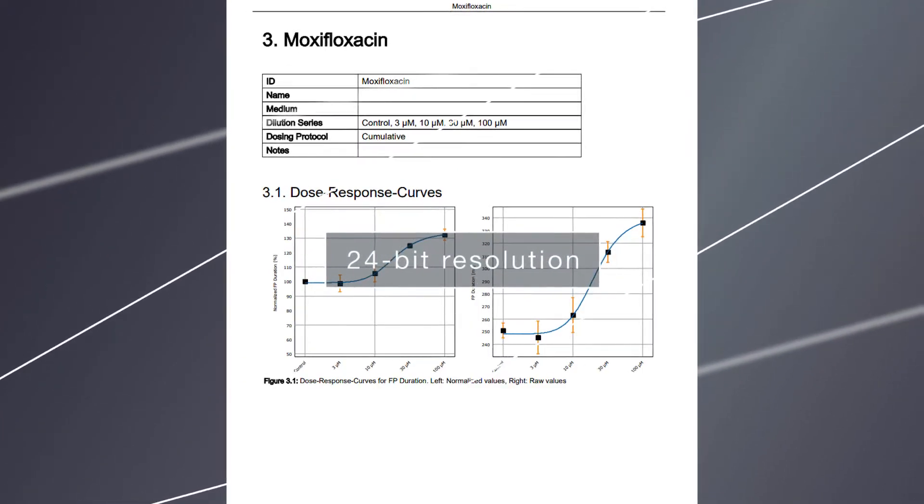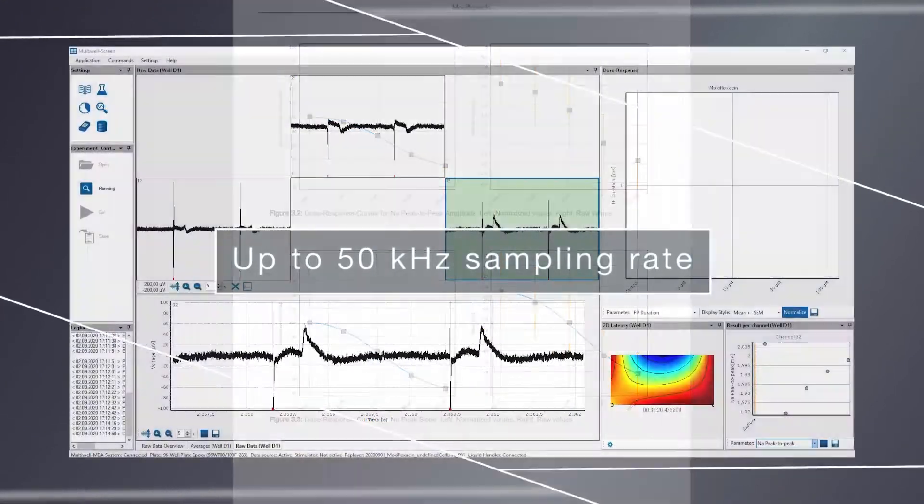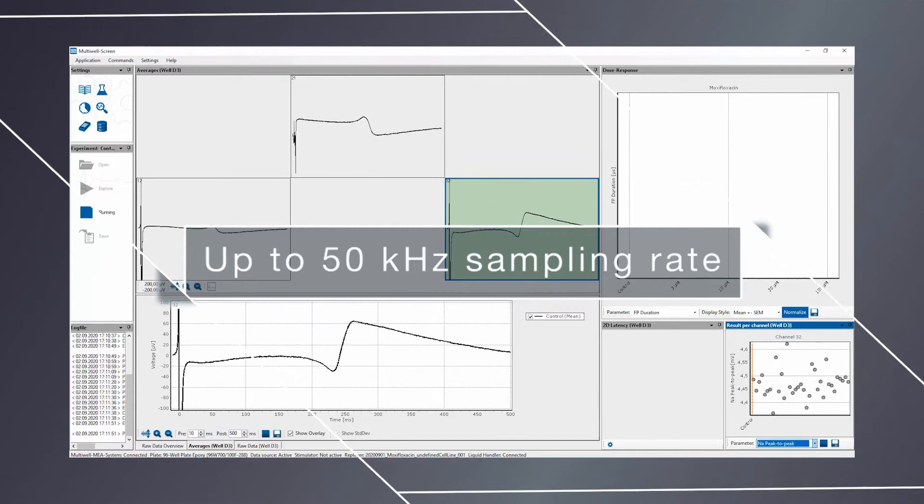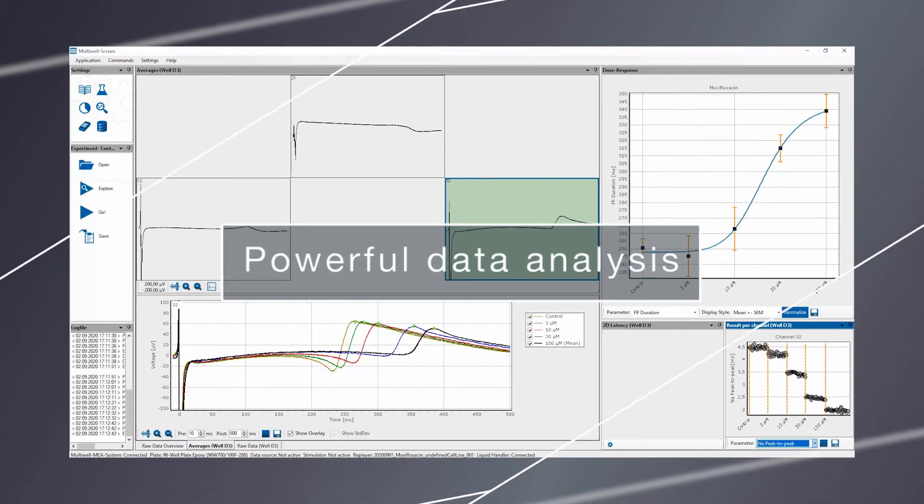MEA Express features 24-bit resolution and up to 50 kHz sampling rate for the highest data accuracy in the field. All of these features result in exceptionally powerful data analysis for your research.